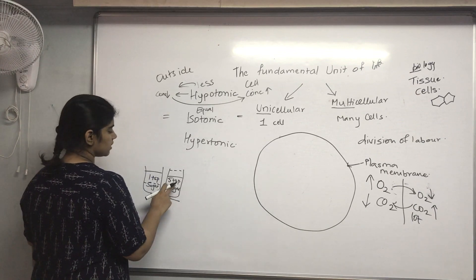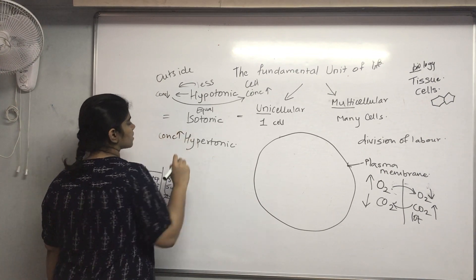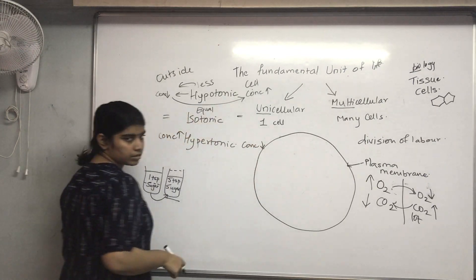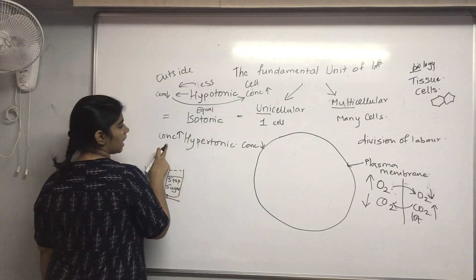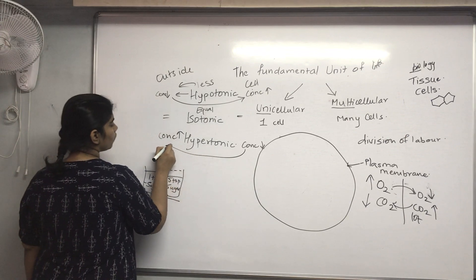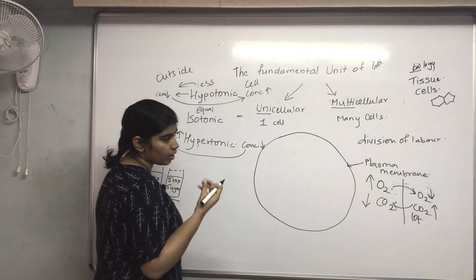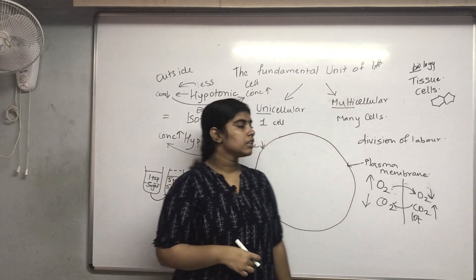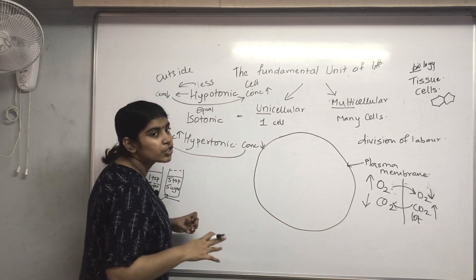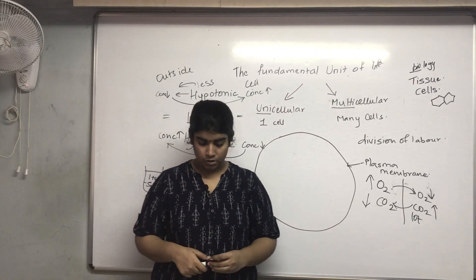In a hypertonic solution, the concentration outside the cell is higher while inside is lower. Water from the cell moves out toward the area of higher concentration outside the cell, and the cell tries to shrink. These are the three types of solutions in the process of osmosis, occurring via the plasma membrane.